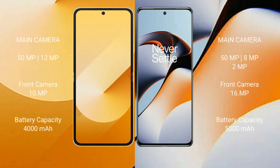Samsung Galaxy Z Flip 6 has a dual camera setup: 50MP main plus 12MP, and a 10MP front camera. OnePlus 11R features a triple camera setup: 50MP main plus 8MP plus 2MP, with a 16MP front camera.